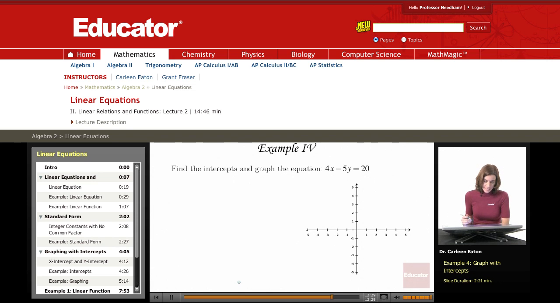Example 4. Find the intercepts and graph the equation 4x minus 5y equals 20. We already talked about how with the x and y intercepts, you can find those and then you'll have two points and you can graph an equation.